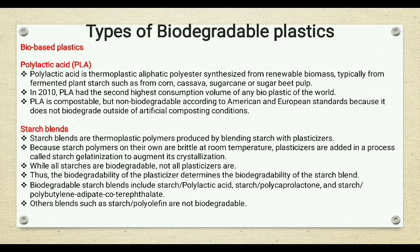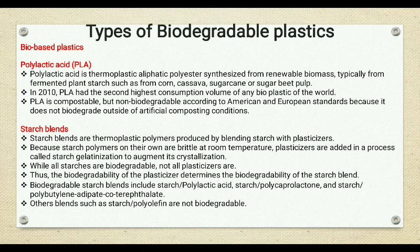There are basically two types of bioplastics based on how they are derived and their main constituents. First are biobased plastics, where biological byproducts are used to create bioplastics. Second are petroleum-based plastics. Biobased plastics are directly derived from renewable biomass like plants, starch, and animals, while petroleum-based plastics are derived from petrochemicals obtained from fossil fuels, crude oils, coal, or natural gas.